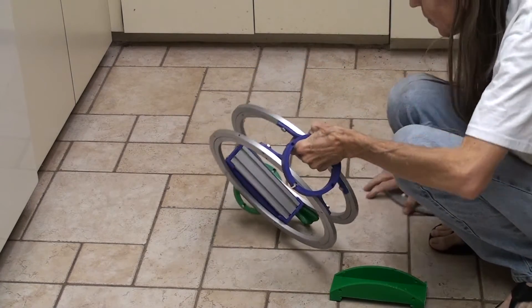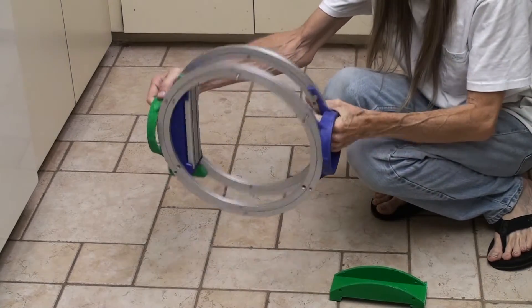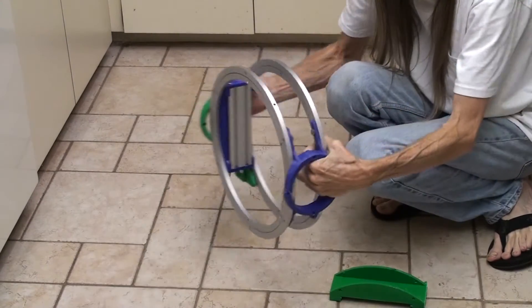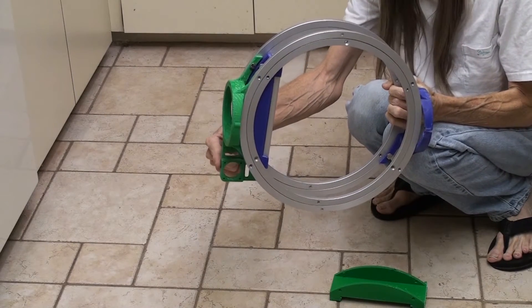This is how it will move. It can tilt like this. It can pan back and forth like this. And here's where the motor goes for the roll.